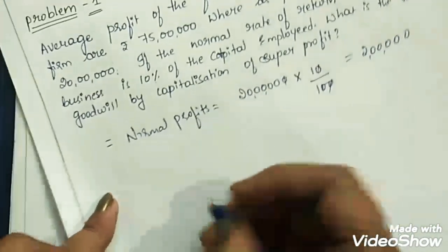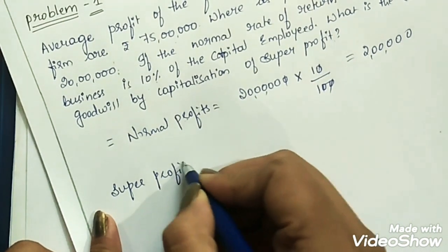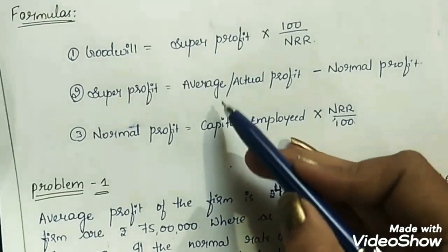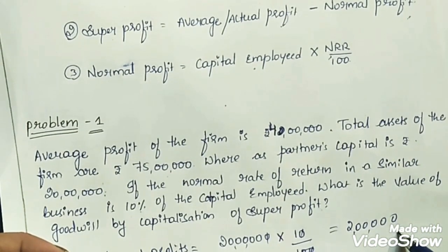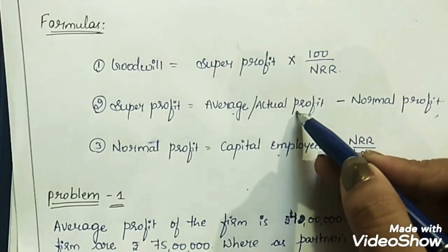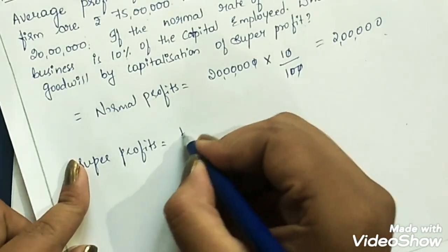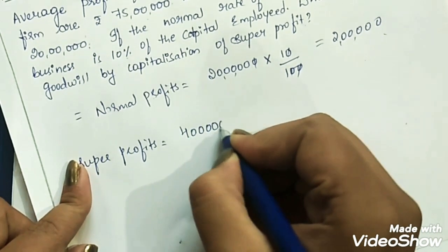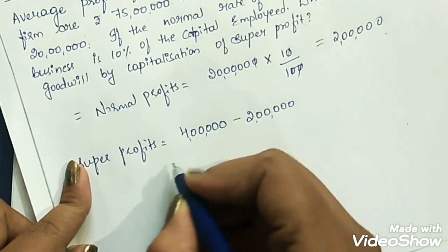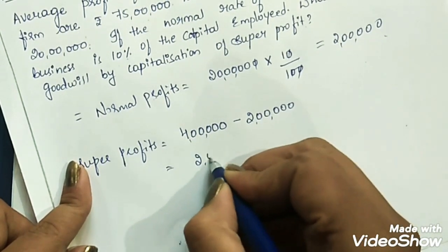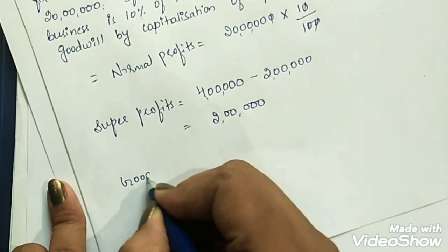Next, we find the super profits. Super Profits = Average or Actual Profit − Normal Profit. Normal profit is ₹2 lakhs and average profit is given in the question as ₹4 lakhs. So: 4 lakhs − 2 lakhs = ₹2 lakhs. Our super profit is ₹2 lakhs.